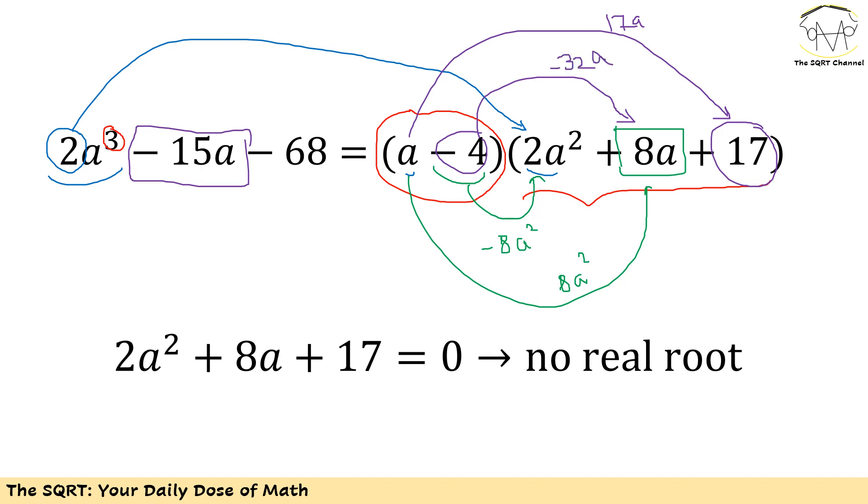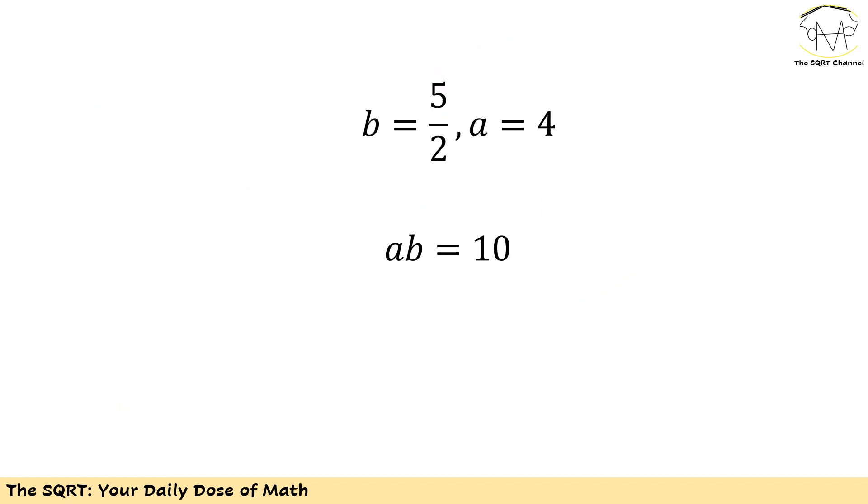Now the question that we need to answer is: is there another root for this cubic equation? To do this I'm going to put 2a² + 8a + 17 = 0. You can verify that there is no real root for this quadratic equation. So at the end a = 4 only. So we have b = 5/2 and a = 4. Therefore ab is going to be 10 and that's our final answer.